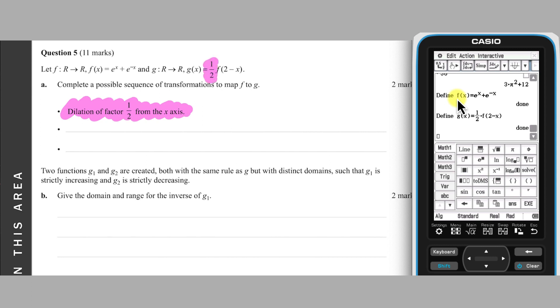Continuing to work from outside in, the next transformation, corresponding to the two, is a translation of two units in the direction of the negative X axis. The third transformation, corresponding to the negative X, is a reflection in the Y axis.